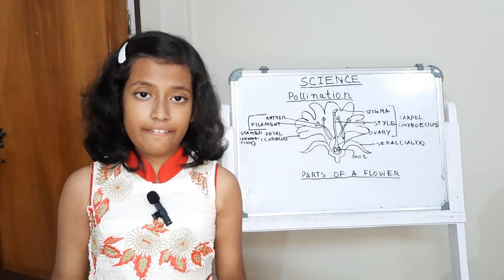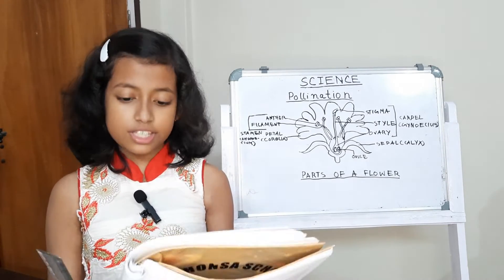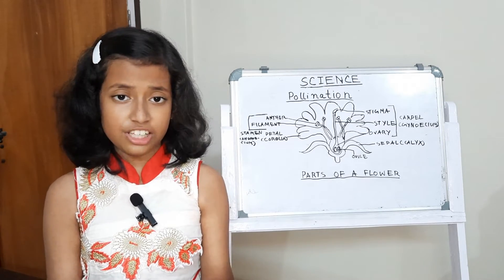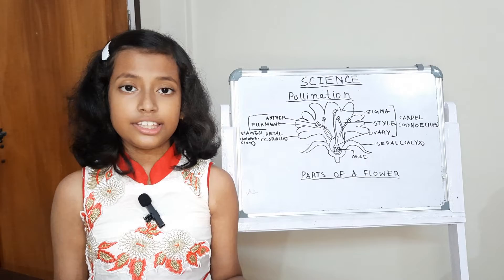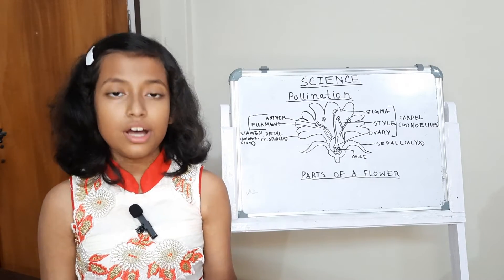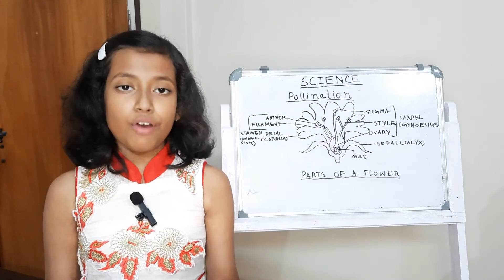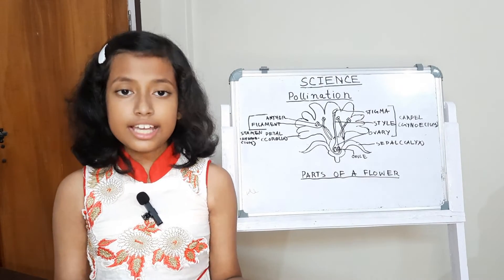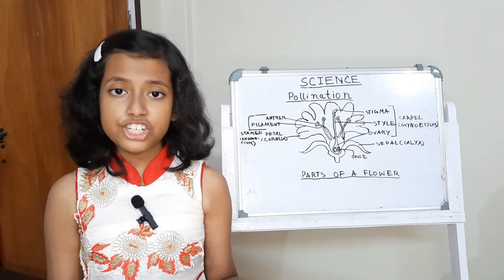Pollination. For a flower to form fruits and seeds, pollination is very essential. Pollination is the transfer of pollen grains from the anther to the stigma of a flower. This transfer can take place with the help of wind, water, or insects. These are called the agents of pollination.